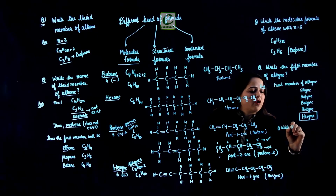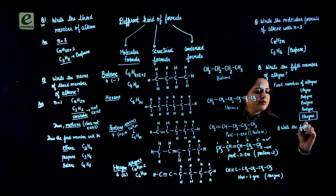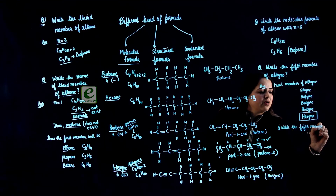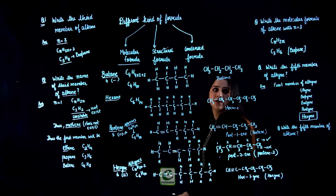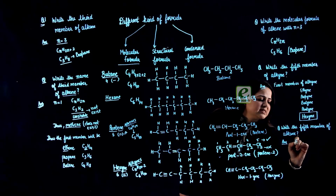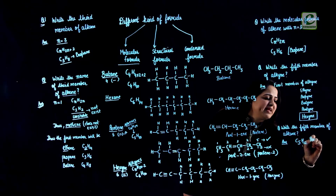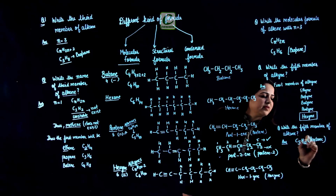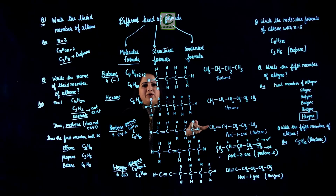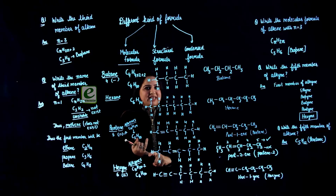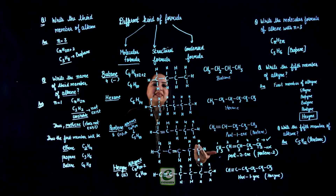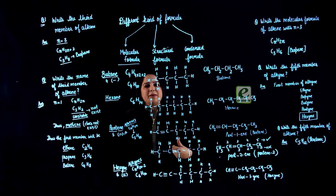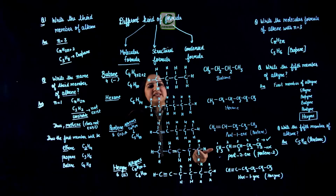But if the question was: write the 5th member of alkane — then alkane starts at methane (1 carbon), so the 5th member is simply C5H12, which is pentane. Thus you need to keep in mind that the first member of alkene and alkyne series does not start at methene/methyne; the first member of alkene is ethene and the first member of alkyne is ethyne.